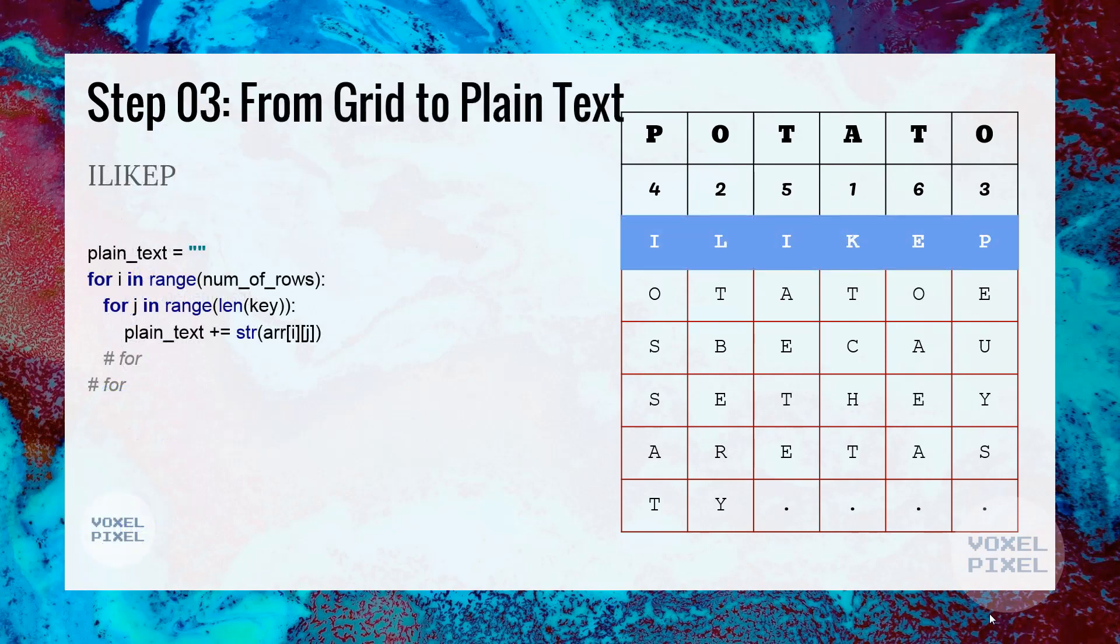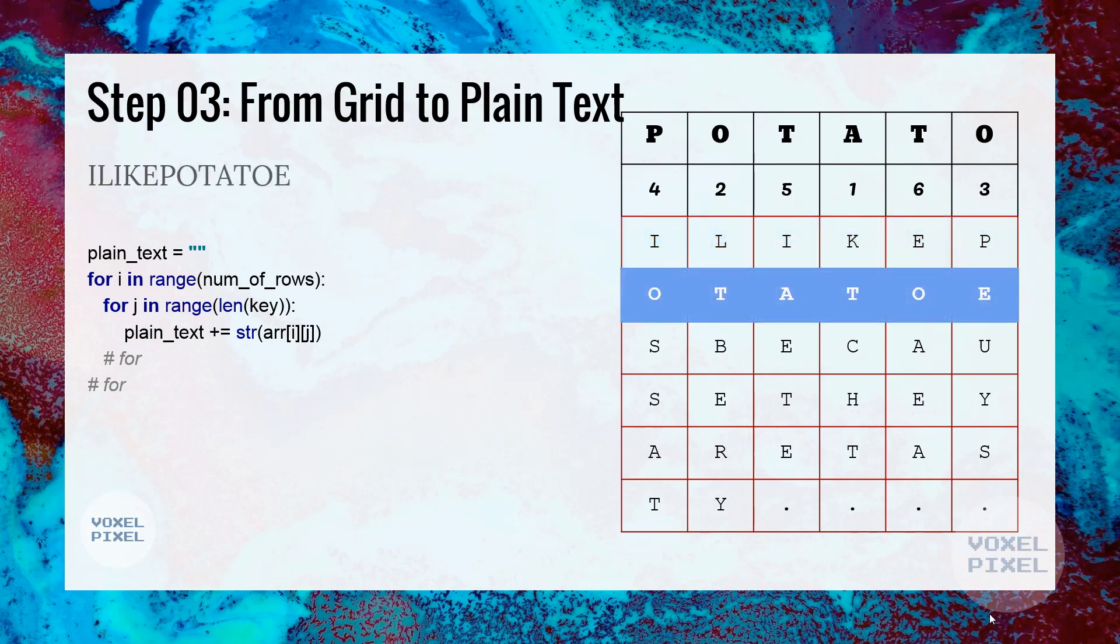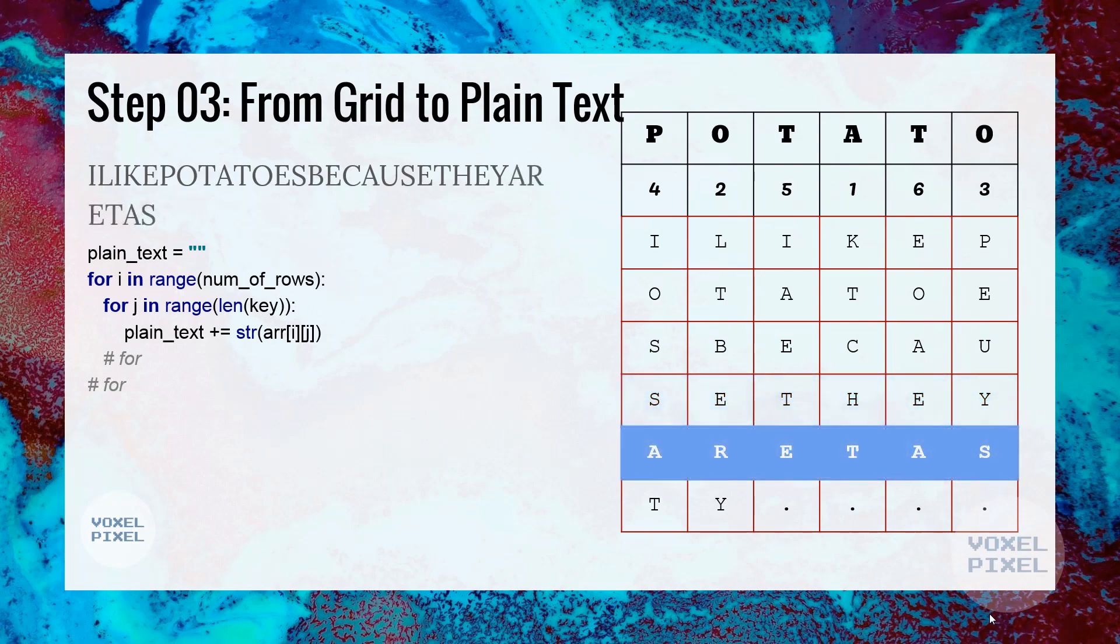Next, we will extract the plain text from the grid. To do that, we will extract each row one by one. First, we extract the first row, then second, then third, then fourth, and fifth, then last sixth row.